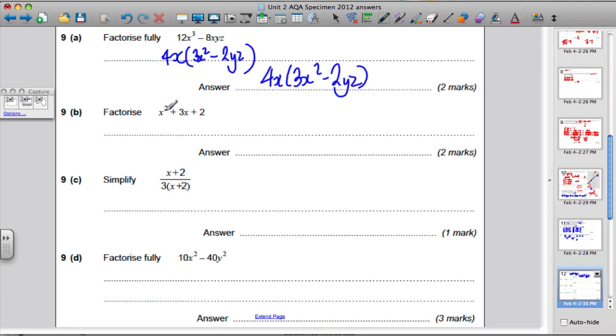OK, factorise the following. This is a quadratic expression because it has an x squared in it and it's got a number here. So these are the ones that I'm putting back into brackets. I'm asking myself, what two numbers multiply to 2 and add up to 3? Well, 2 and 1 do because 2 plus 1 is 3 and 2 times 1 is 2. So this factorises to x plus 1, x plus 2.